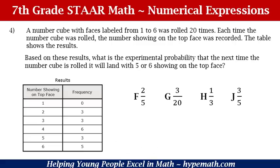Let's get started. Question 4 says: a number cube with faces labeled from 1 to 6 was rolled 20 times. Each time the number cube was rolled, the number showing on the top face was recorded. The table shows the results. Based on these results, what is the experimental probability that the next time the number cube is rolled it will land with 5 or 6 showing on the top face? Answer choices: F) 2 out of 5, G) 3 out of 20, H) 1 out of 3, J) 3 out of 5.